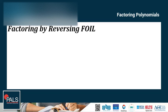Now let's proceed to factoring by reversing FOIL. Many polynomials that are made up of an x squared term, an x term, and a number term can be factored into two binomials by undoing the steps of FOIL. Let's observe the steps using an example.